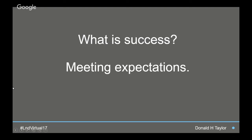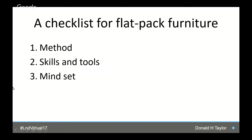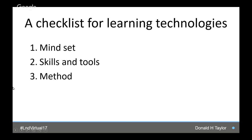My checklist for assembling flat-pack furniture: you need a method — otherwise you end up with bits and pieces left over. You need skills, tools, and a mindset — the ability to have conversations about what you're doing. The checklist for a learning technology implementation is not very different, just with things in a different order. The most important thing is the mindset: what do you set out with on the path of creating the implementation? Then you need the skills and tools, and finally you need a method.